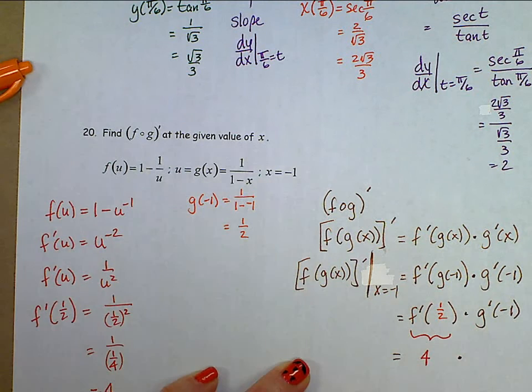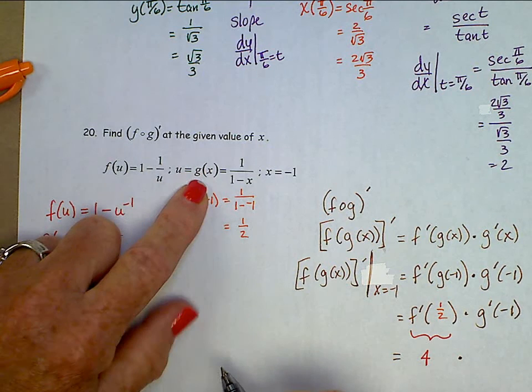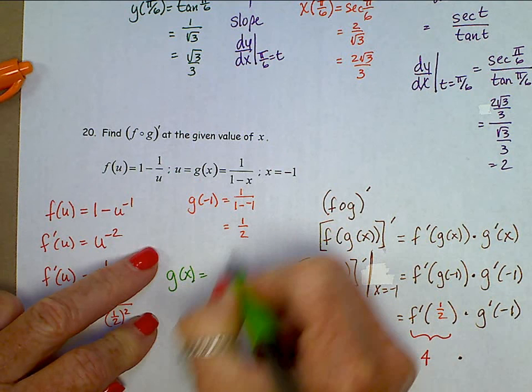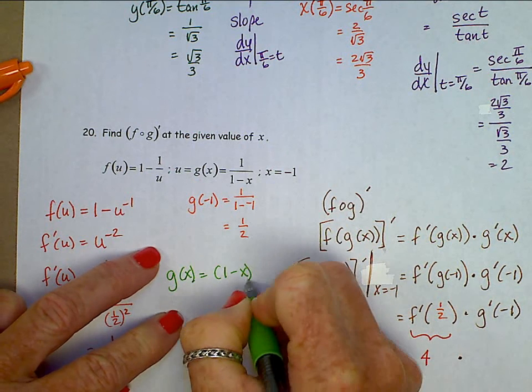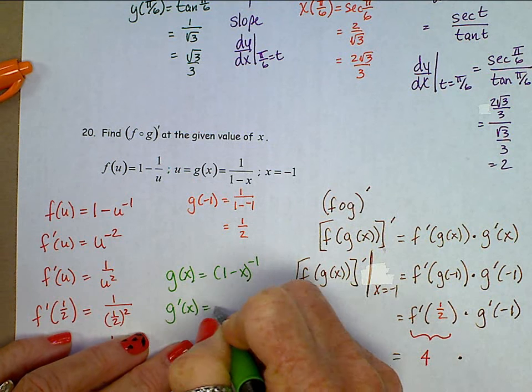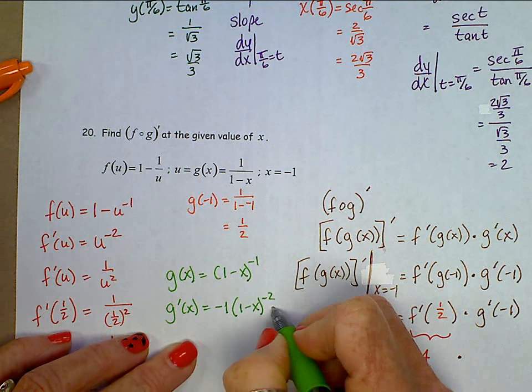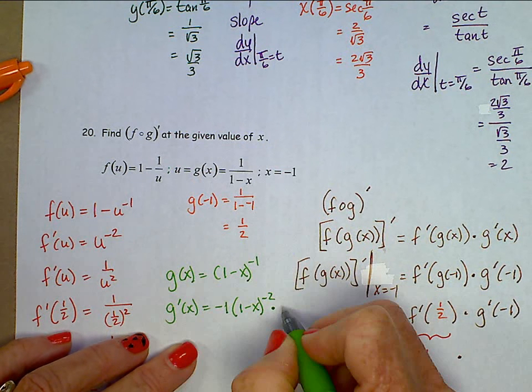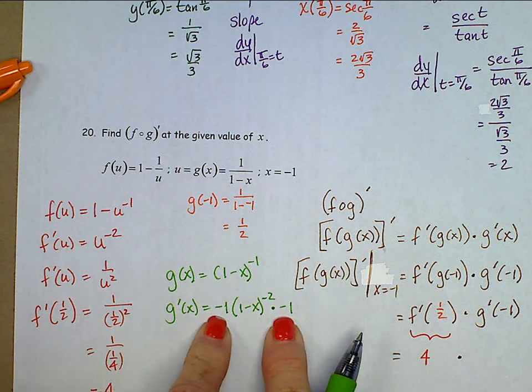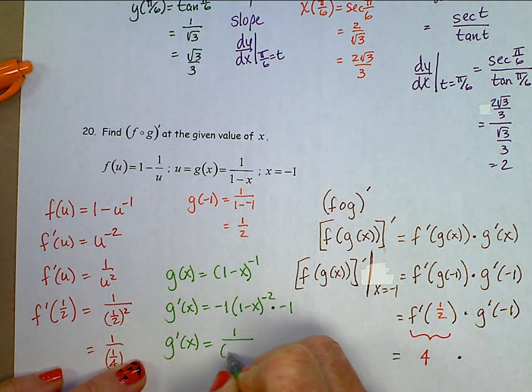Now let's find g prime at negative 1. Here's g. Let's find g prime. I'm going to rewrite that g of x, so I don't have a quotient rule. So 1 minus x to the negative first. Then when we do that derivative, we'll have negative 1 times the 1 minus x to the negative 2, times the derivative of the inside, negative 1. That is sweet because the negative 1 times the negative 1 become a positive 1. And g prime then is just 1 over 1 minus x squared.